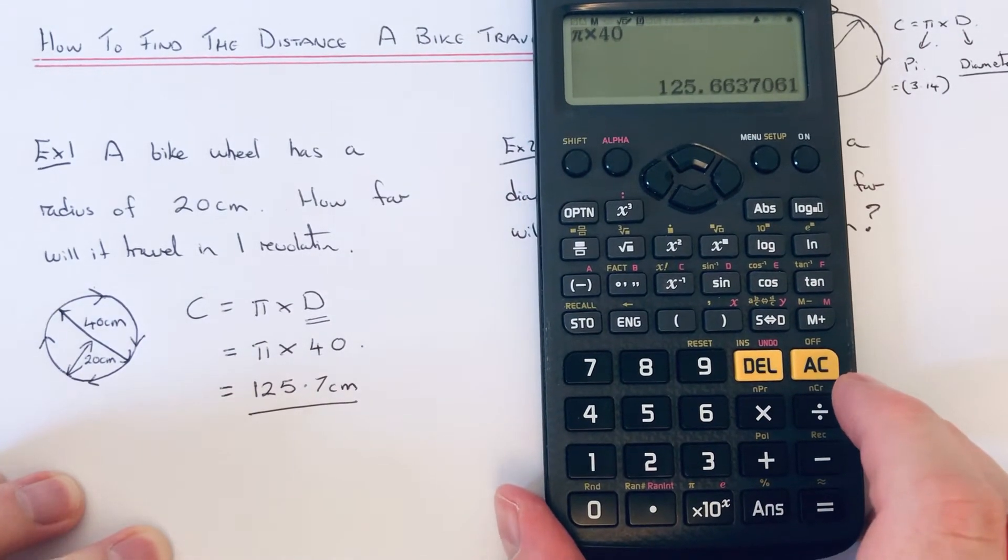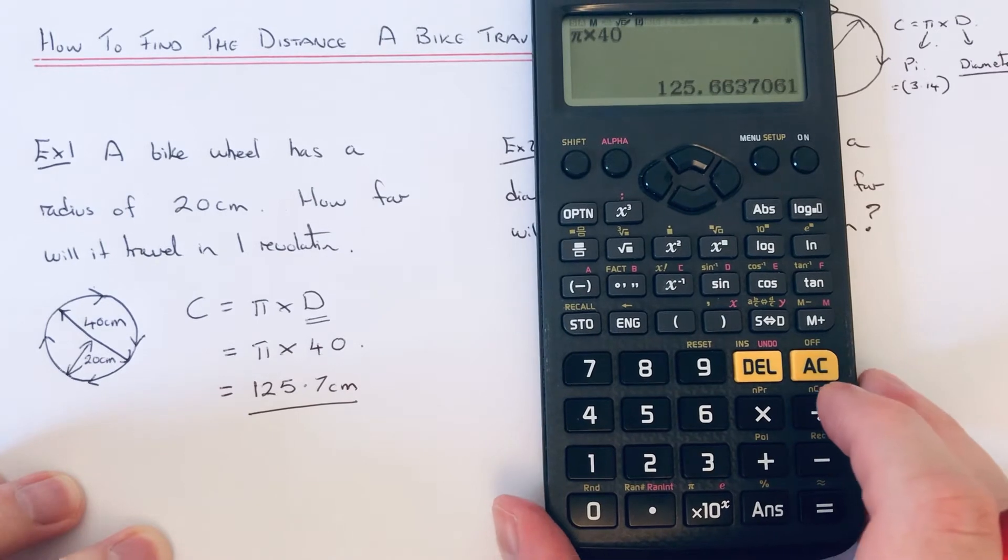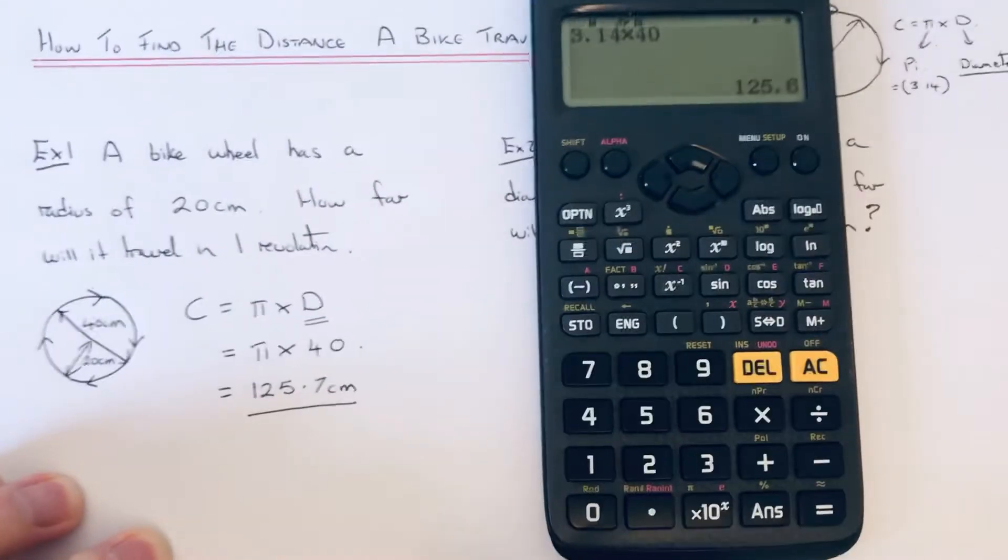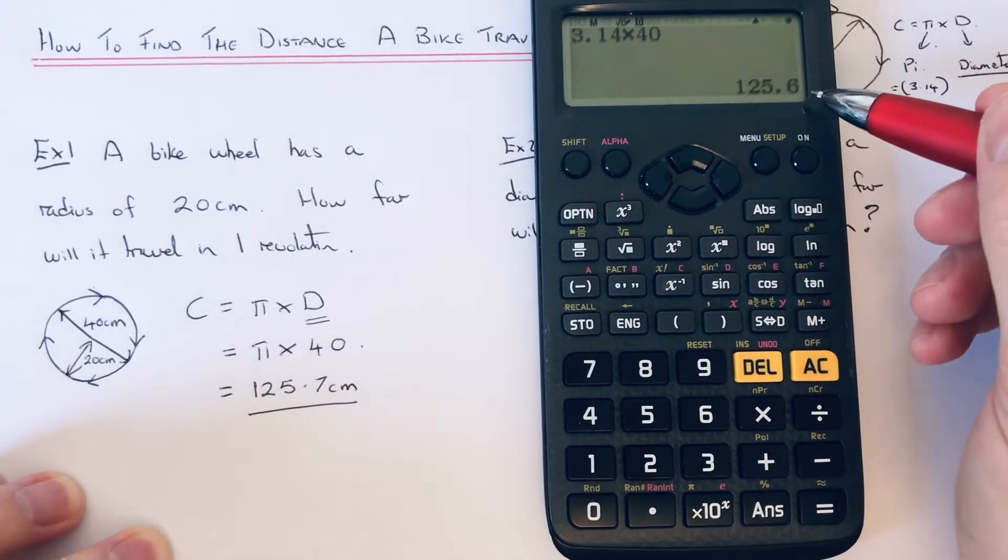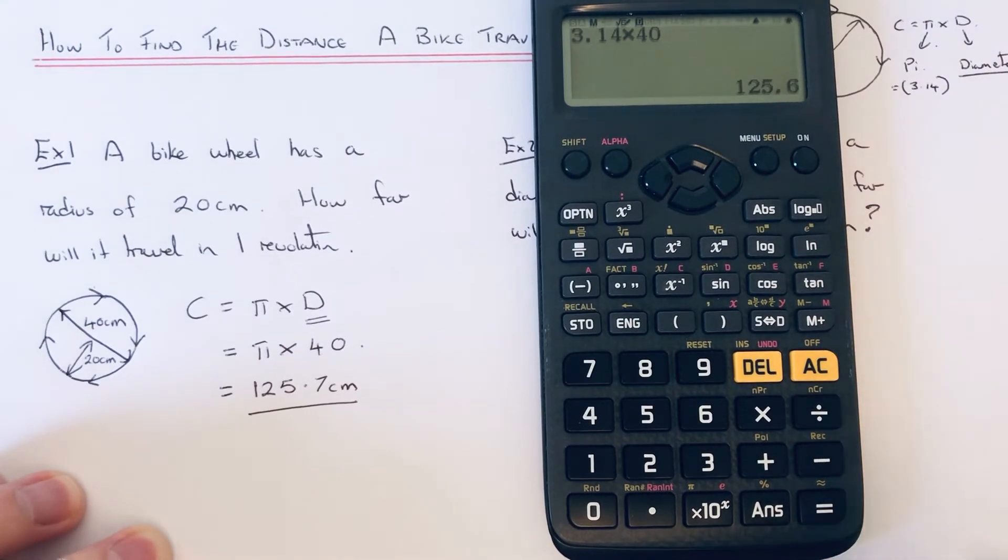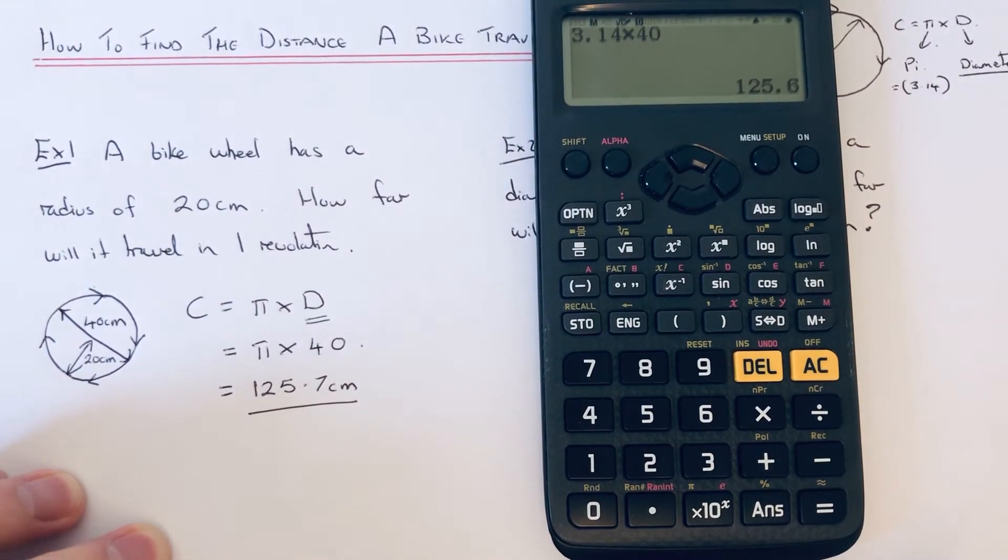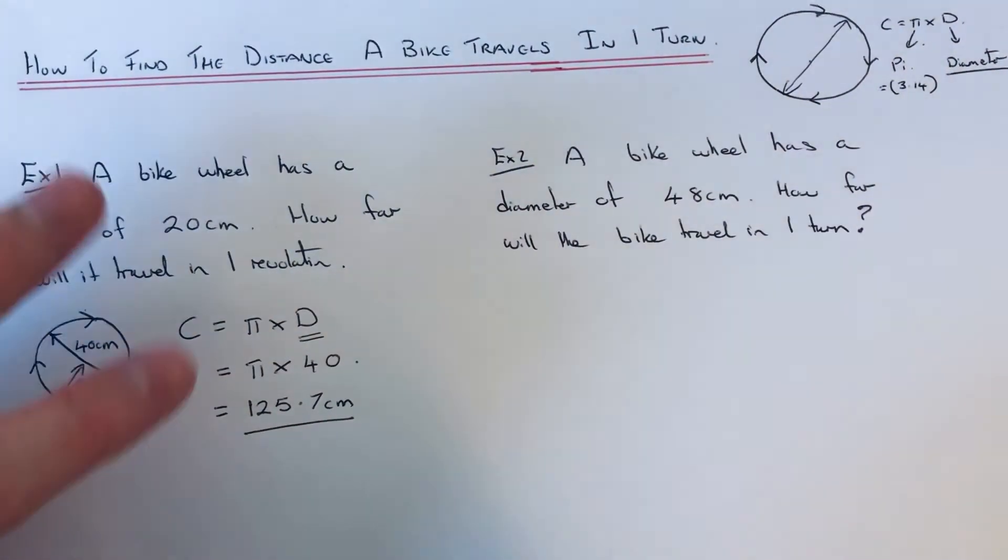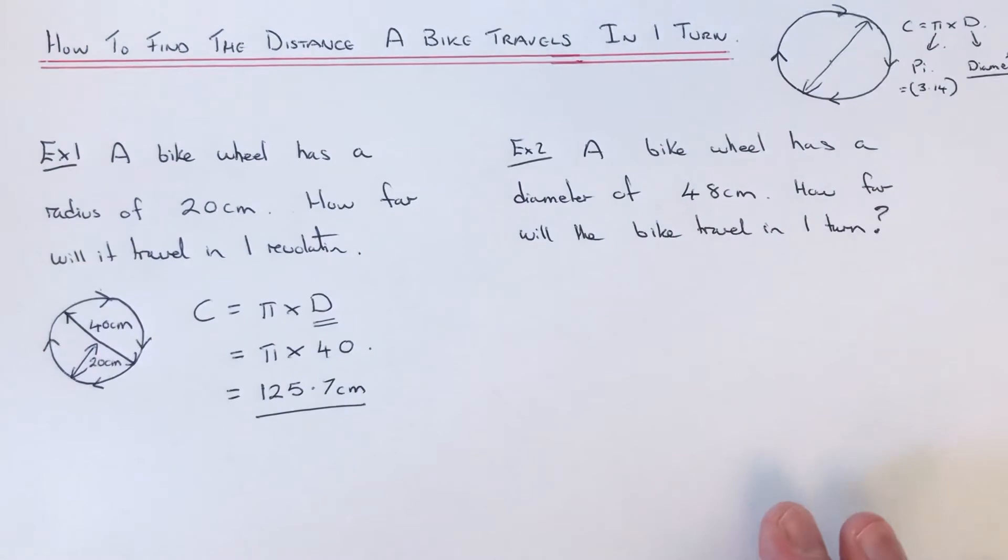Let me show you how you do it if you didn't have a scientific calculator. You'd go 3.14 times 40 and you get 125.6, so it's not as precise as what you would have got if you'd used the pi key. Let's have a look at the second example.